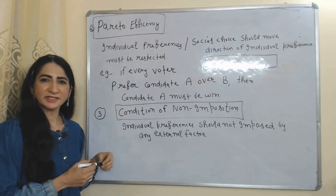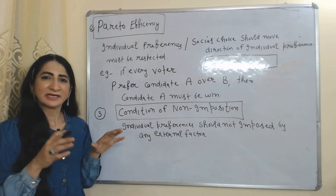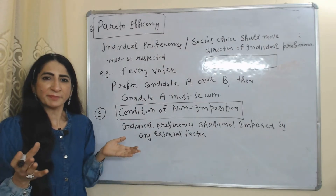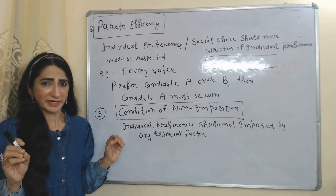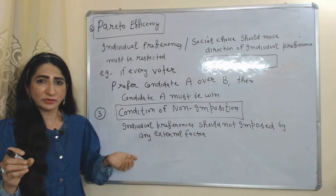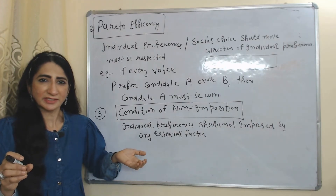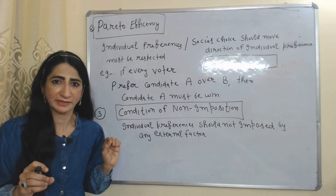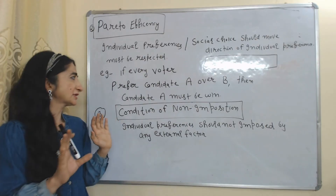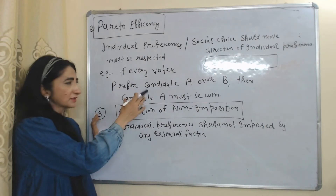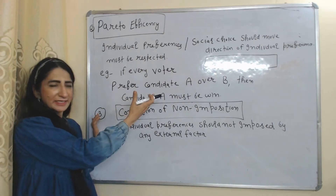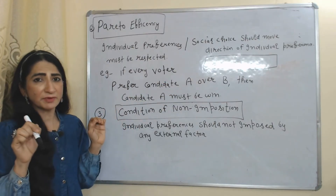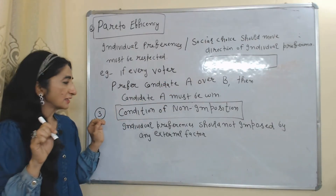The second condition is Pareto efficiency. This means individual preferences must be respected — social choices should move in the direction of individual preferences. For example, if every voter prefers candidate A over B, then candidate A must win.